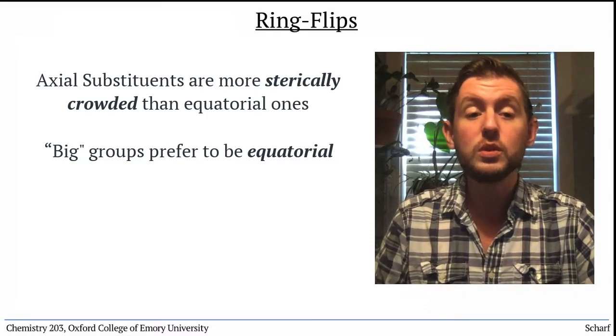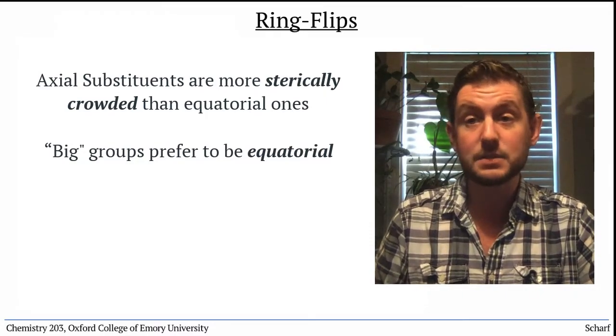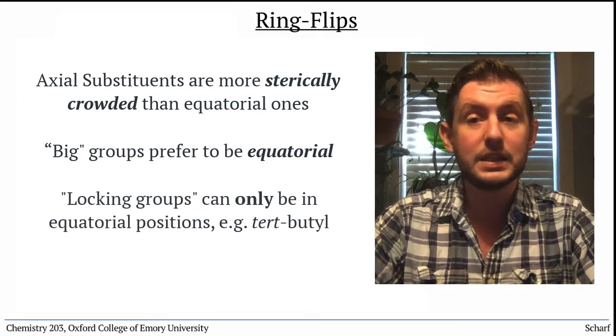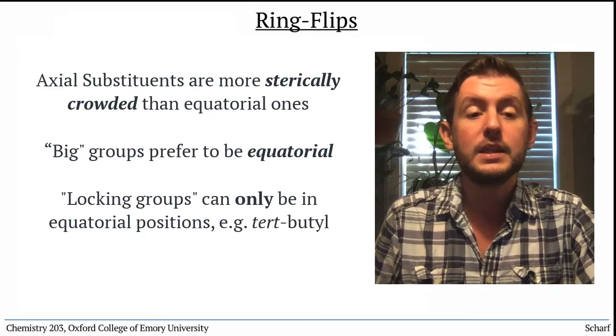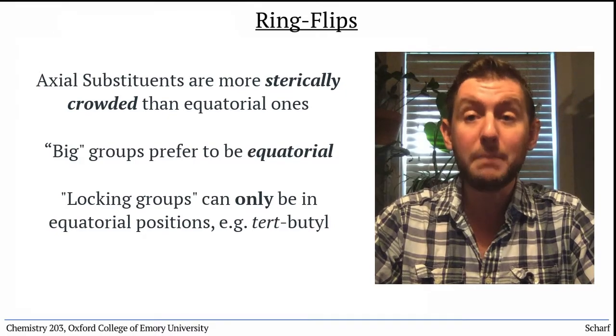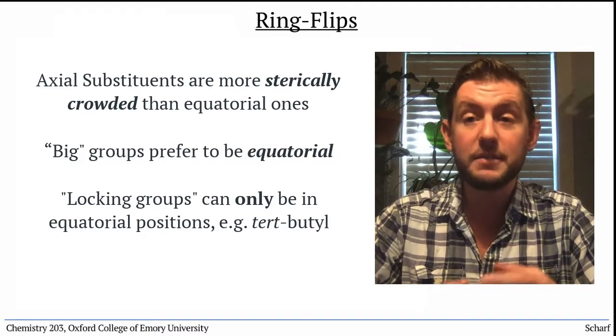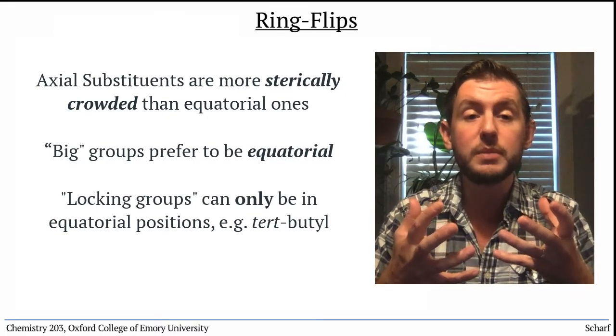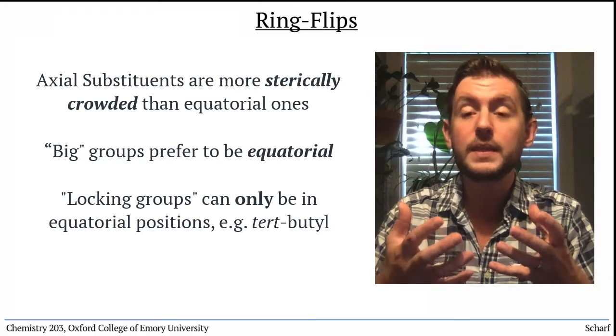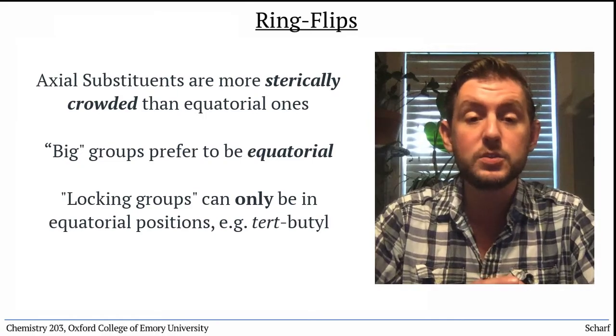In fact, some groups are so large that they virtually can't be forced into axial positions. These are known as locking groups. The only one that we'll be concerned with is the tert-butyl group. These groups must be equatorial, so they effectively lock the conformation of the cyclohexane and the positions of all the other substituents into place.